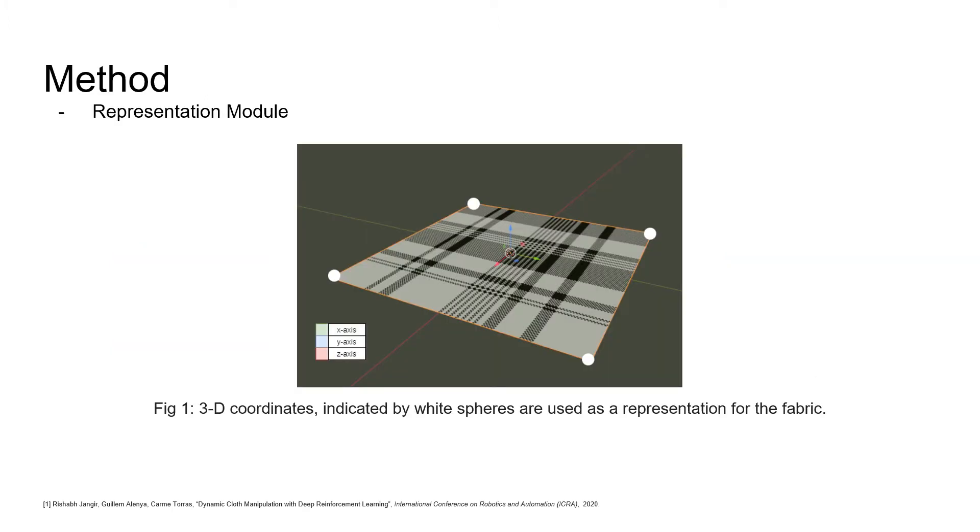The first method we use for representing fabric is using the 3D coordinates of the corners. This can be seen as the white spheres in the diagram. We suspect that this representation will fail for cases involving highly crumpled configurations. This is because a cloth can theoretically attain an infinite number of configurations with just four corners fixed.